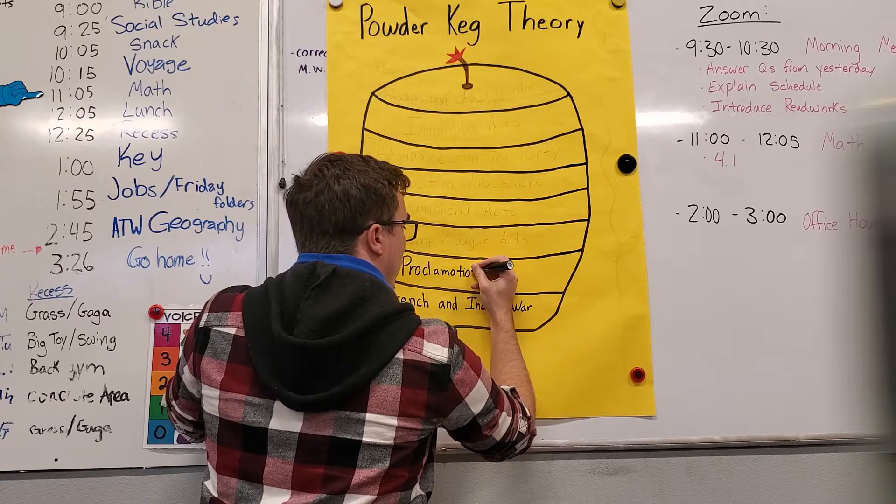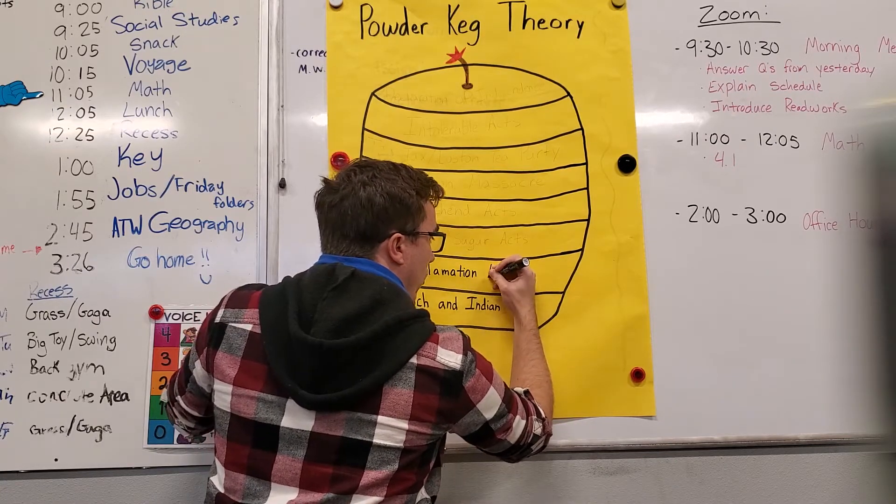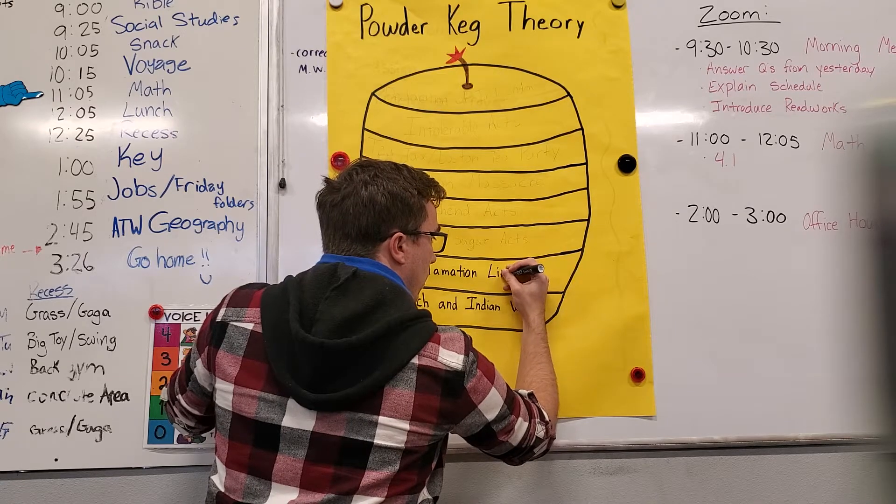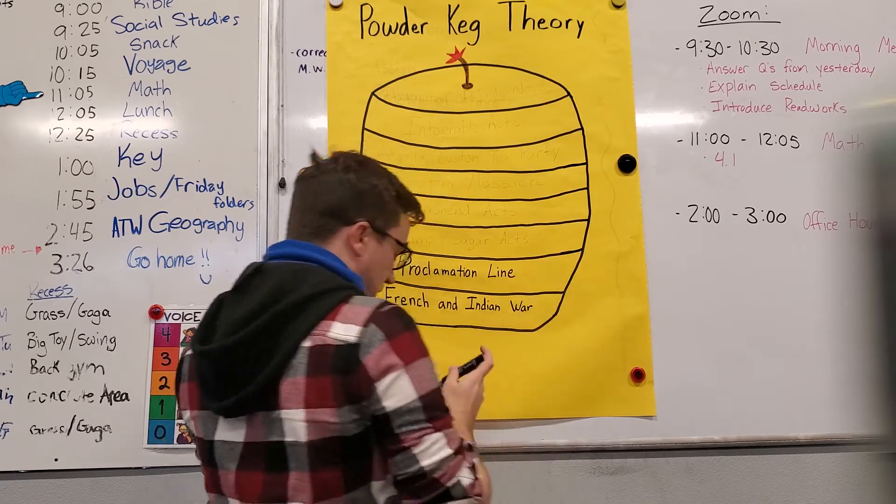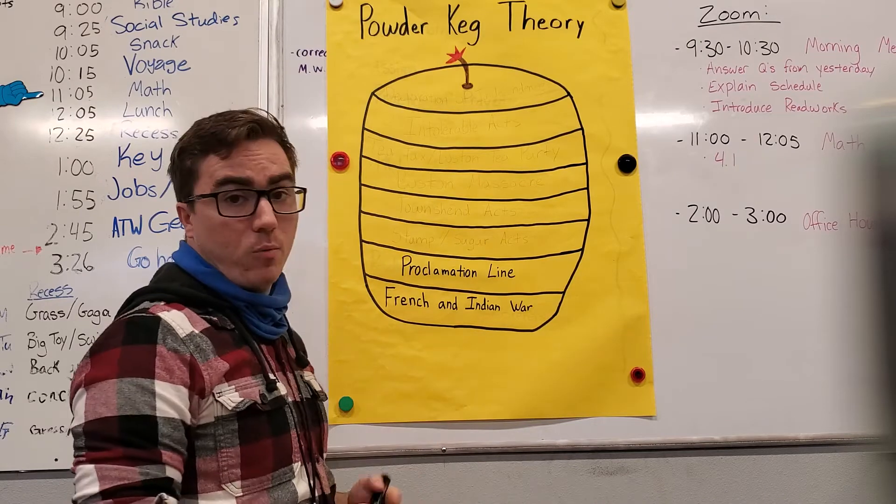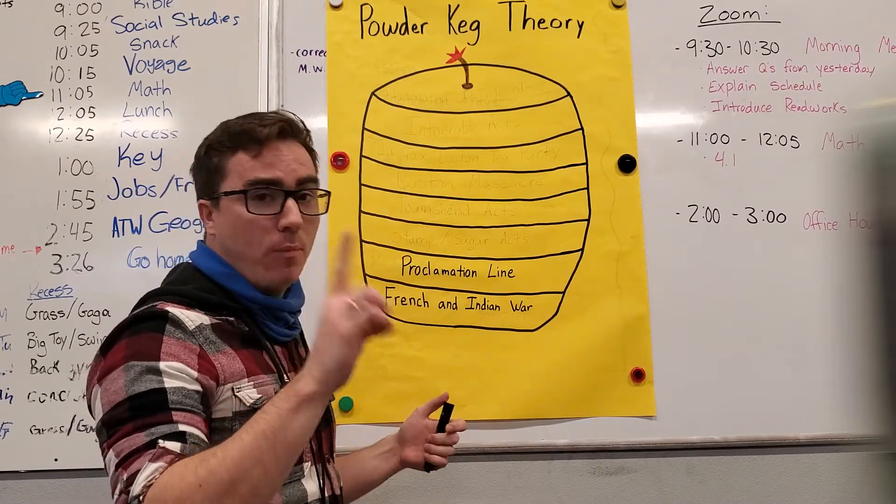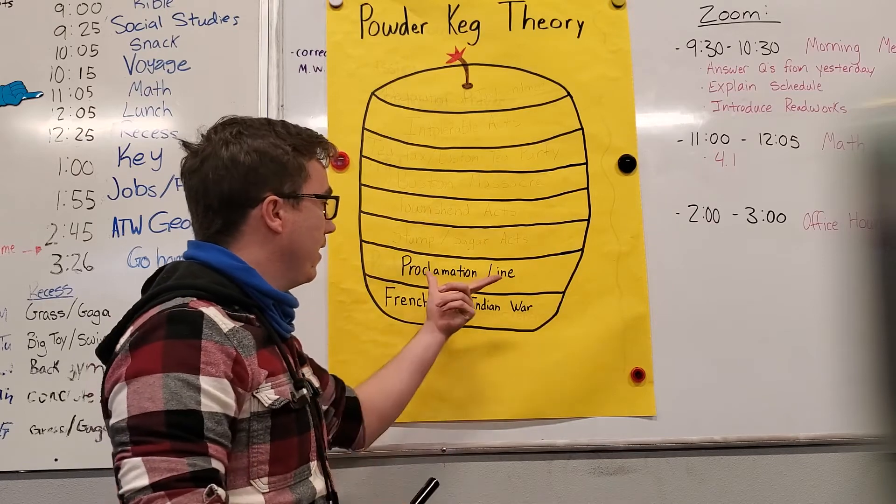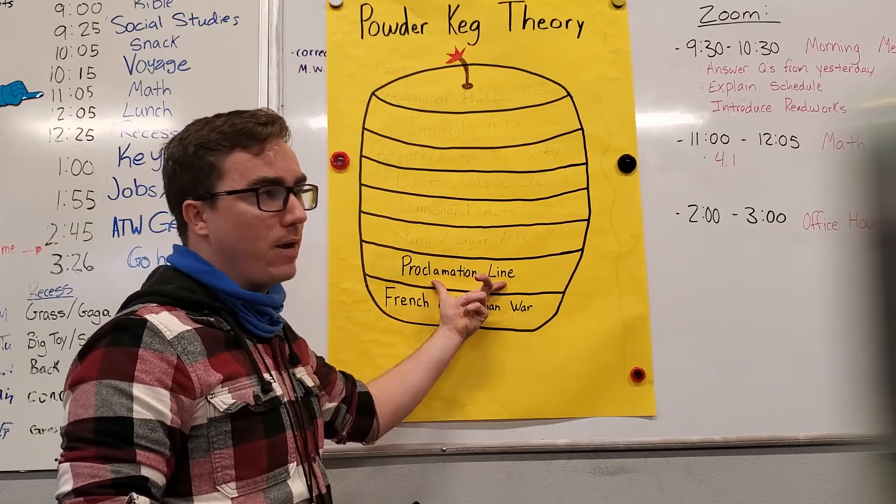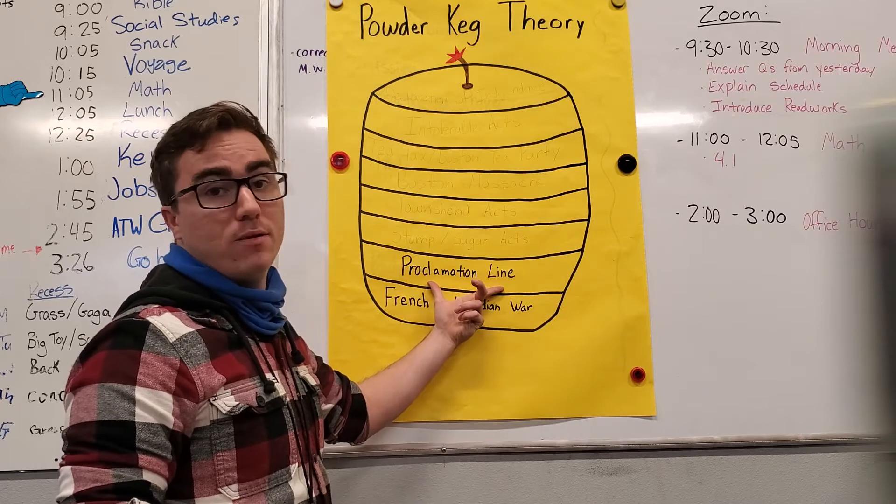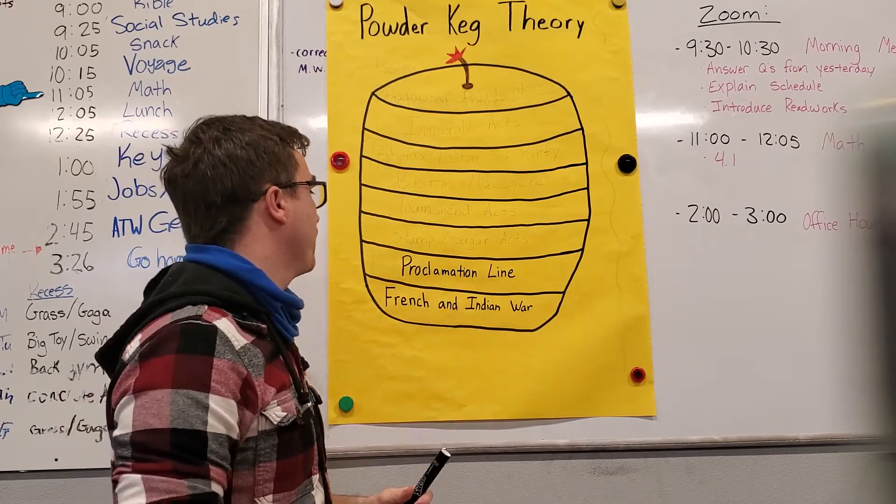And again, you guys should be following along in your own books. So what was the proclamation line? Well, after the French and Indian War, England won more land. And the colonists helped fight for that land. But the colonists, even though they fought for it, they died for it, they lost money for it, they were not allowed to move into that new land.